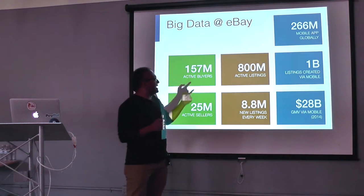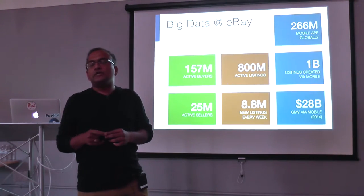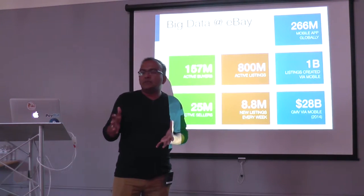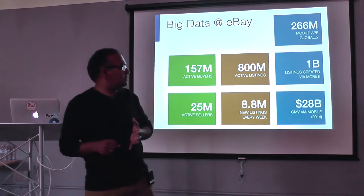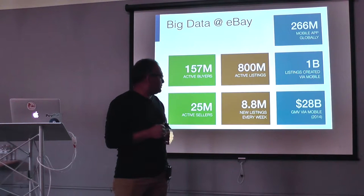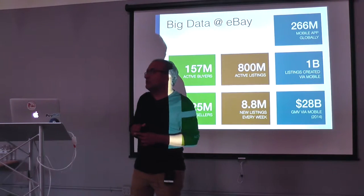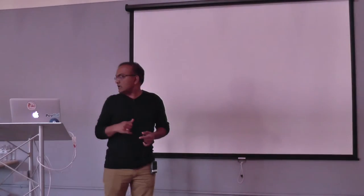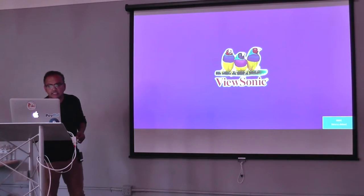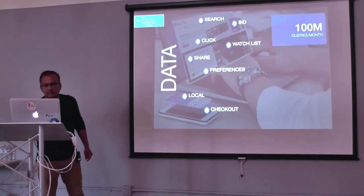There are 800 million listings on eBay, and a big portion of what we do in analytics is to take a look at these unstructured listings and create a structured catalog around them. Every week we have 8.8 million listings added. A big portion of eBay's revenue is actually transitioning over into mobile — today it's close to 40 percent.